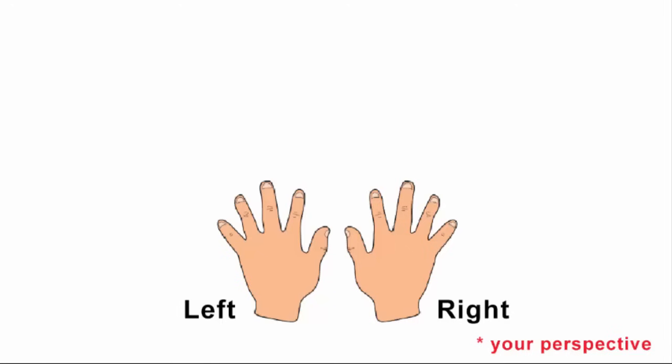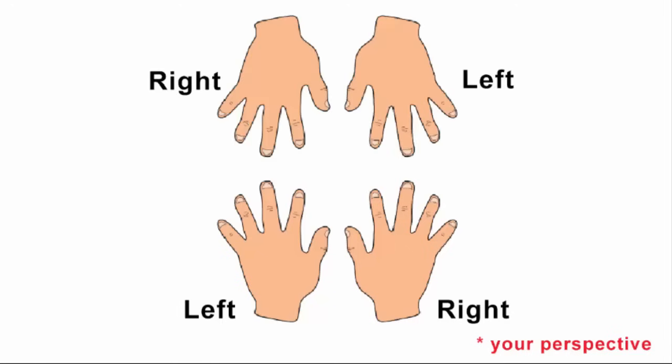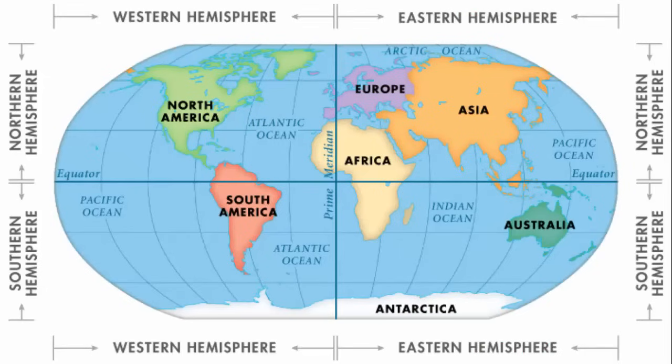Do not mix your left and right viewpoint with east and west directions. Left and right depend upon your perspective. What is left to you is right to the person standing opposite to you. On the other hand, east and west directions are fixed. The sun rises in the east regardless of your right and left direction.